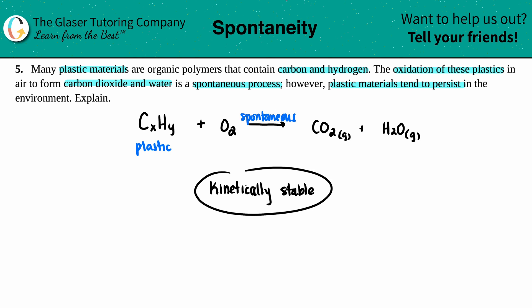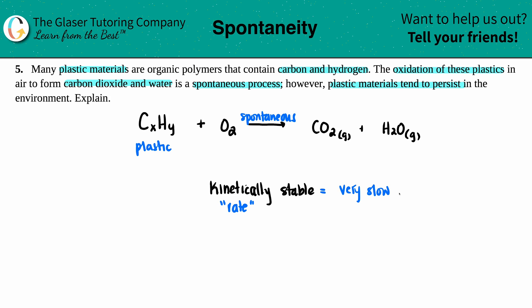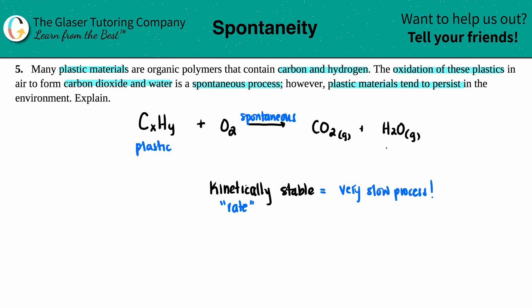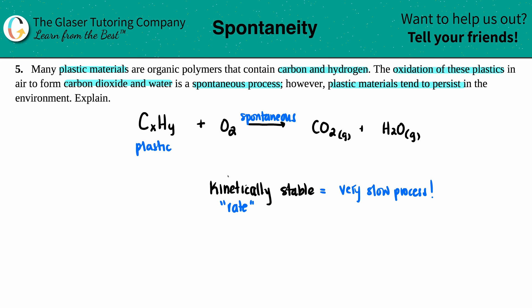Kinetics refers to the rate of something. If something is kinetically stable, it means it does not happen super fast — it's a very slow process. The combustion of plastics is a spontaneous reaction, but it's kinetically stable, meaning it will take years and years. Plastic persists in the environment because some spontaneous reactions — like combustion of gasoline — happen instantly, while others, like plastics breaking down, are extremely slow.